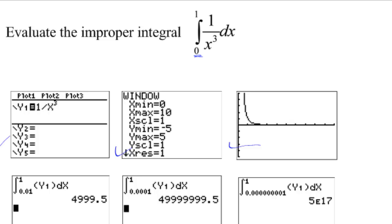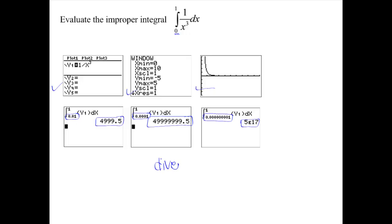1 over x cubed definitely has a vertical asymptote at x equals 0. So what I did is I picked a fairly small, 1 one-hundredth, picked a fairly small value close to 0 to see if I could get an idea whether we were converging or diverging. And that area is already pretty much 5,000 square units. So just to test, I went to 1 ten-thousandth and the area grew. So to press my luck, I got even closer to 0 to see what was going on. And now I have 5 with 17 zeros. So this clearly diverges. And that's how we can use our calculator on both types of improper integrals to help us get an idea of whether area is converging or diverging.